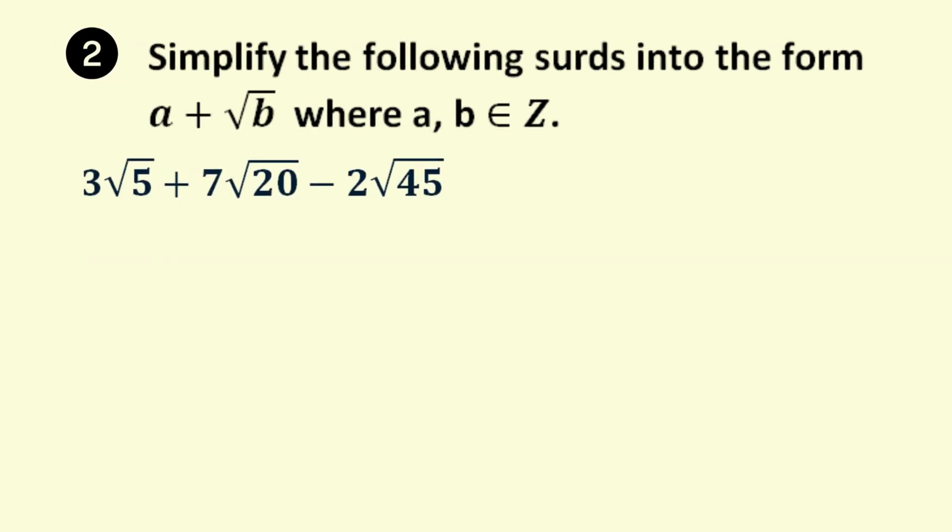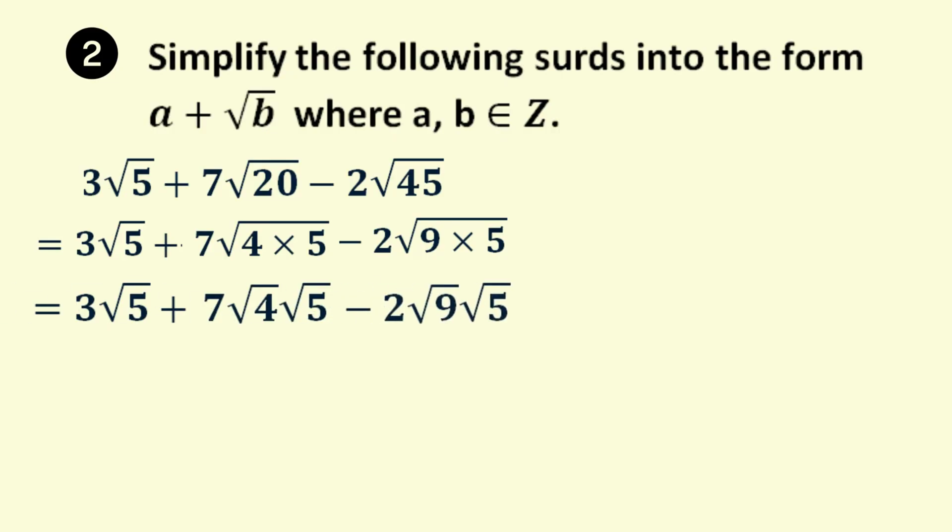Let's try another example. Simplify 3 root 5 plus 7 root 20 minus 2 root 45. This time the smallest surd is root 5, so we'll rewrite all the terms in root 5. So we restate 3 root 5. 20 can be written as root 4 times 5, and 45 is 9 times 5. Root 4 times 5 is root 4 times root 5. Now 7 times root 4 is 14, since root 4 is 2. 2 times root 9 is 6, since root 9 is 3. Group all the terms in root 5, and we get 11 root 5.